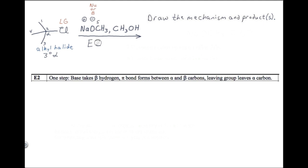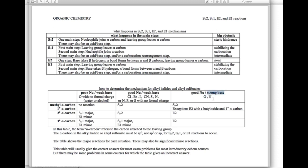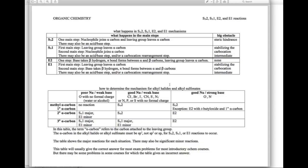Now that we know the mechanism will be E2, we know we're not going to use a nucleophile — we're going to use a base. So we can label the O- as acting as a base. An E2 mechanism uses a base, not a nucleophile. Our table tells us that O- is a strong base, so I'll label the O- SB for strong base. You're going to need to memorize this table if you want to use it on exams. Later we'll see how it also applies to alkyl sulfonates.